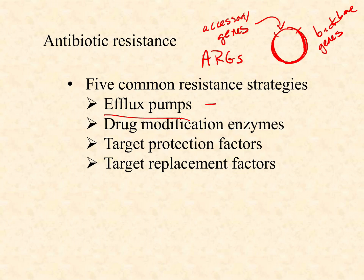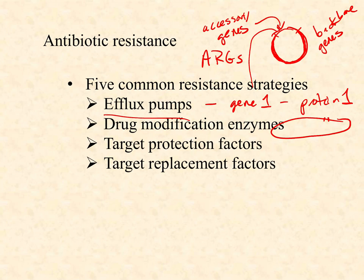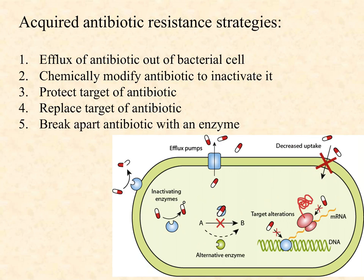An efflux pump as a resistance strategy means there's a gene on the accessory region of the plasmid that, when expressed, forms a protein — in this case an efflux pump. It embeds itself in the cell membrane and any antibiotic that gets inside gets pumped back out. The genes encoded on the plasmid produce a protein, and that protein carries out each of the different resistance effects we're going to talk about. Let's go through the first four with examples, then we'll cover the fifth in part three.